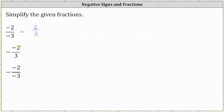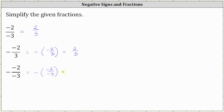Next, we have negative and then negative 2 over positive 3, where we can think of this as the opposite of negative 2 over positive 3. The opposite of any negative is going to be positive, so this simplifies to positive 2 thirds. And for the third fraction, we have the opposite of negative 2 over negative 3. Writing this as negative, then in parentheses negative 2 over negative 3, and working inside the parentheses first, a negative divided by a negative is positive. This simplifies to the opposite of positive 2 thirds, which is equal to negative 2 thirds.